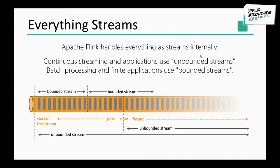For Apache Flink, everything it sees is basically a stream. If you have a continuous streaming program or a running application based on Flink, those will be unbounded streams that can start in the past and go on into the future. Flink also processes batch jobs in the same way — those streams will be finite. It could be that data started and ended in the past because you are processing historic data, but for Flink itself, everything is a stream.